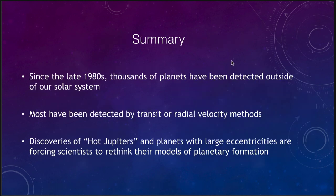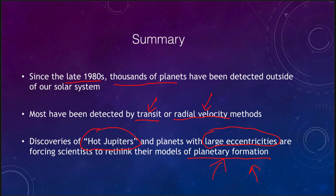So let's finish up here with our summary. And what we've looked at is that since the late 1980s, we have discovered thousands of planets outside of our solar system. Many have been detected by the two methods I went over here. I talked about the transit and the radial velocity method, looking at eclipses of the star by the planet, and looking at the changes in velocity of the star caused by gravitational tugs of the planets. Some of the interesting things we find are hot Jupiters, very large planets close to their stars, and planets with large eccentricities. And these are really forcing scientists to rethink their models of how the planets formed.